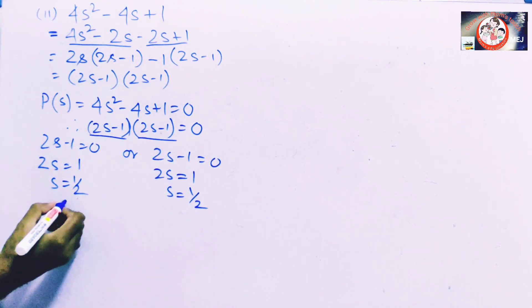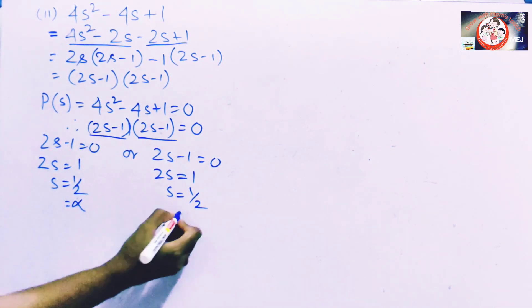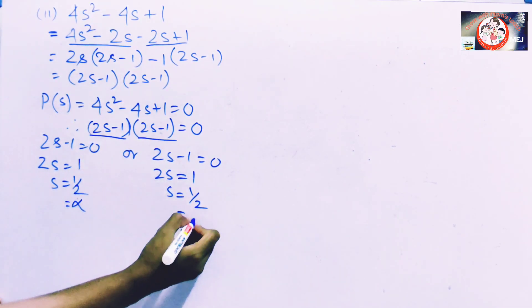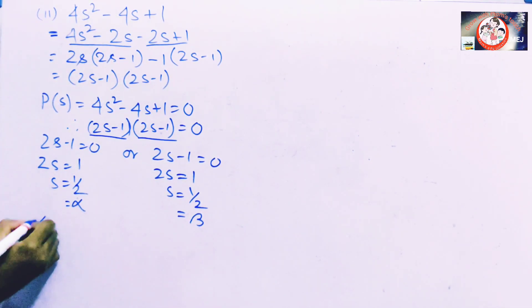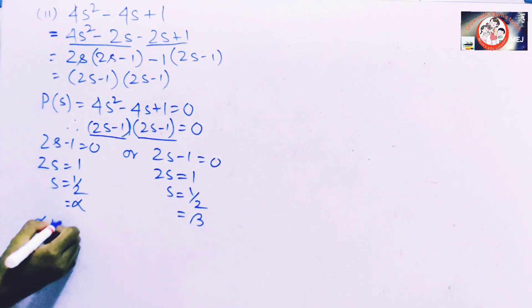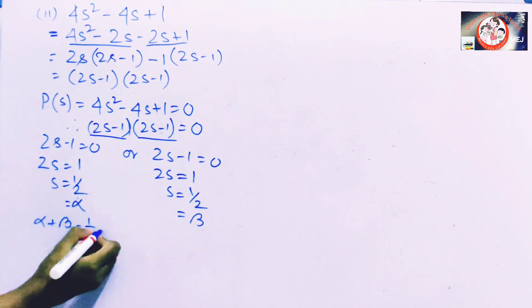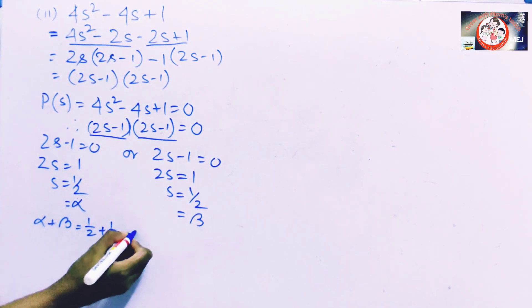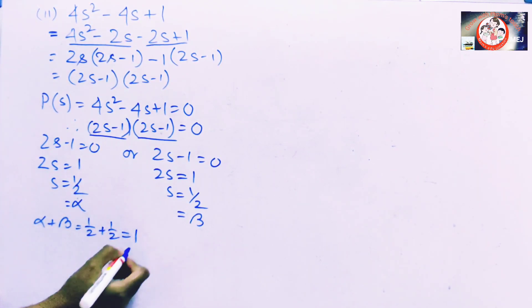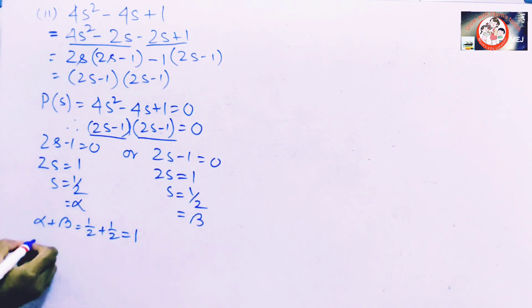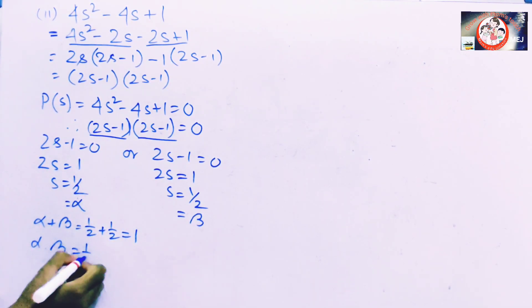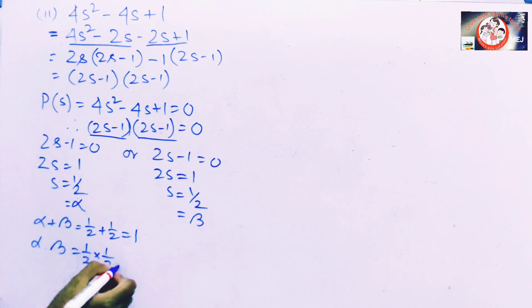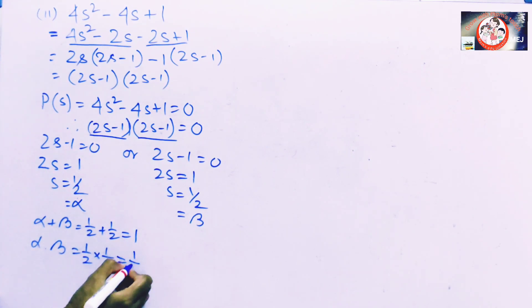If the first zero is our alpha and the next is beta, then alpha plus beta equals 1/2 plus 1/2 equals 1. And alpha into beta equals 1/2 into 1/2, that is 1/4.